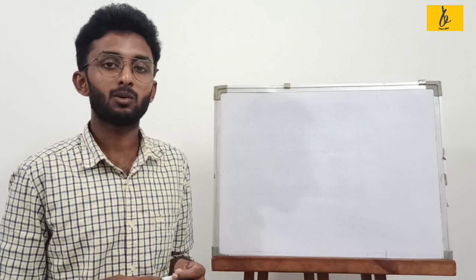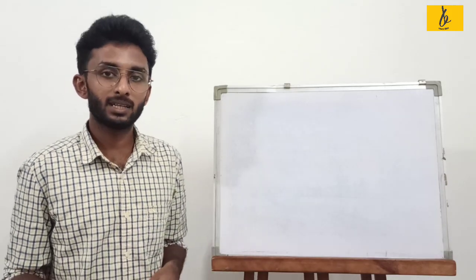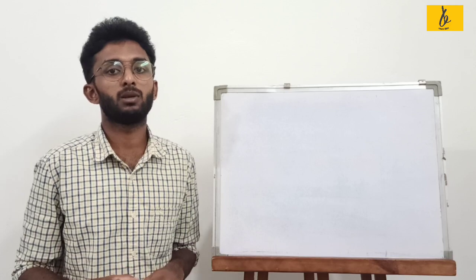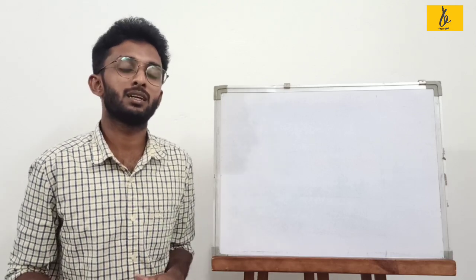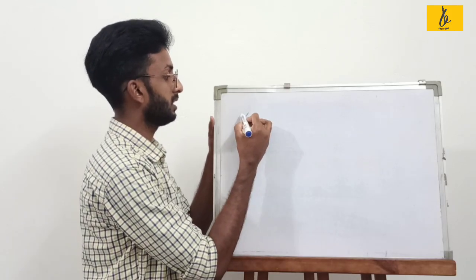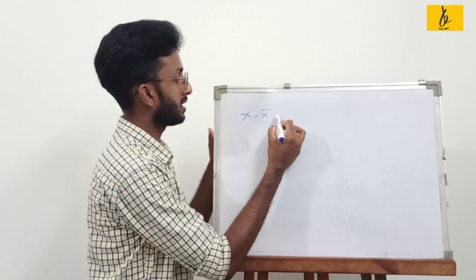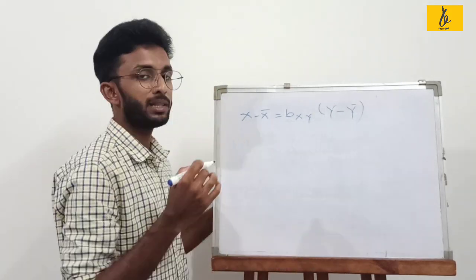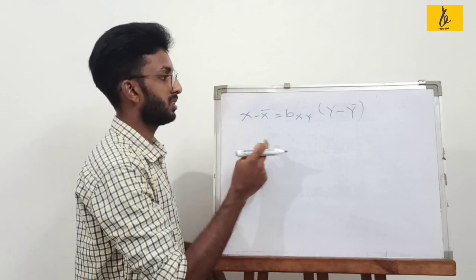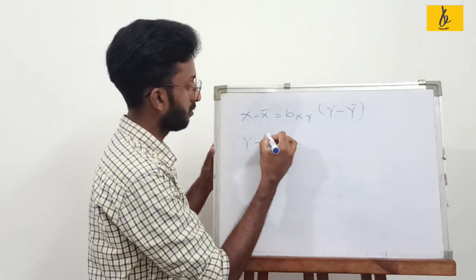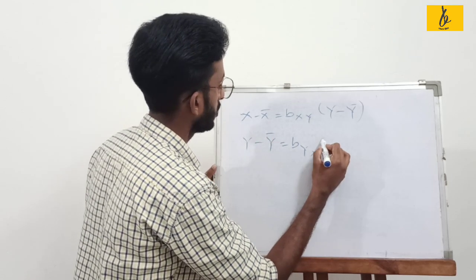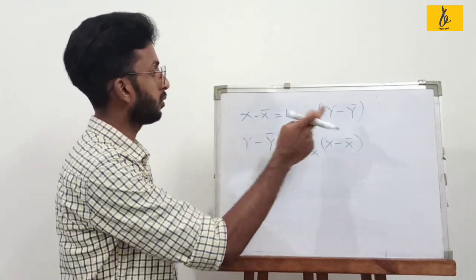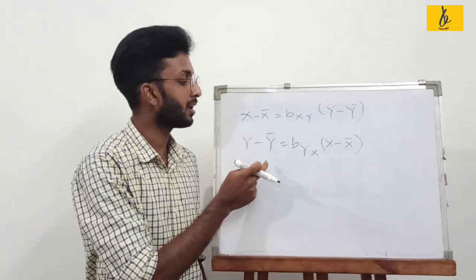We are looking at how to derive the regression equation. The first regression equation is: x minus x-bar is equal to bxy into y minus y-bar. The second regression equation is: y minus y-bar is equal to byx into x minus x-bar. This first is the regression equation of x on y, and the second is the regression equation of y on x.